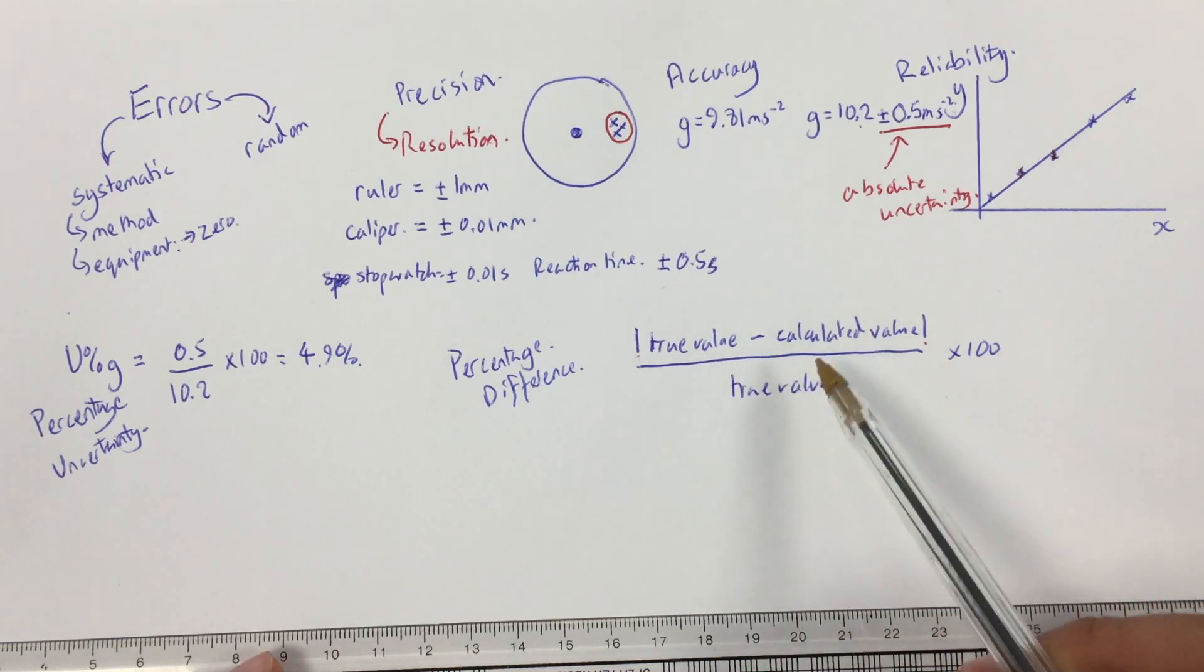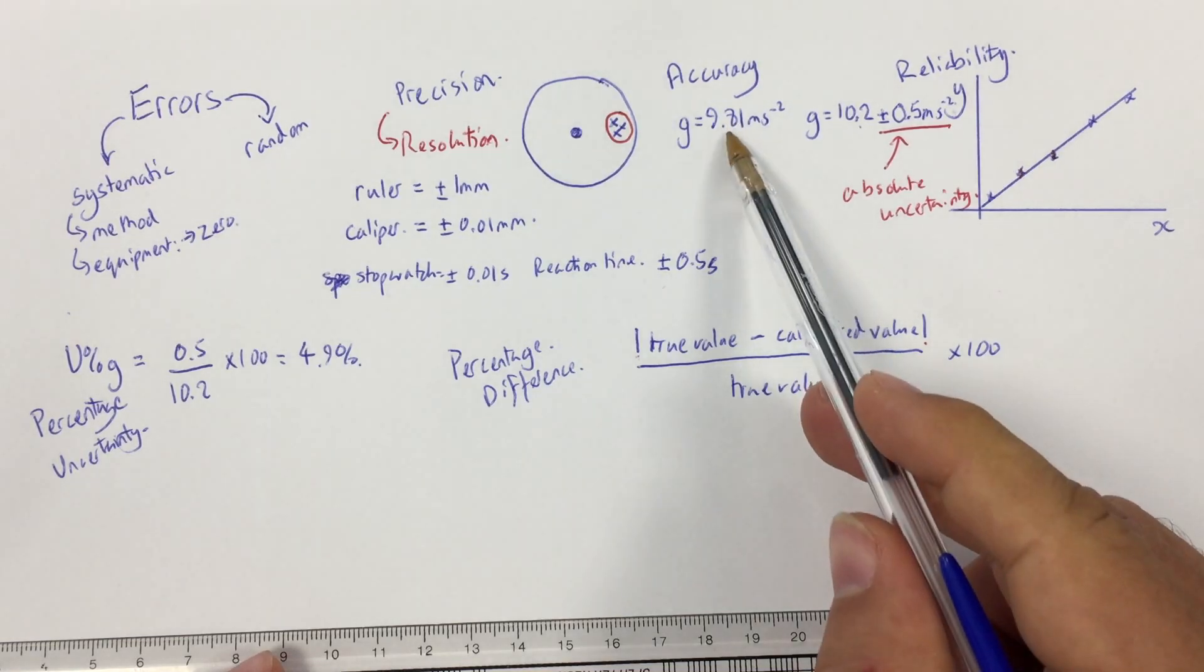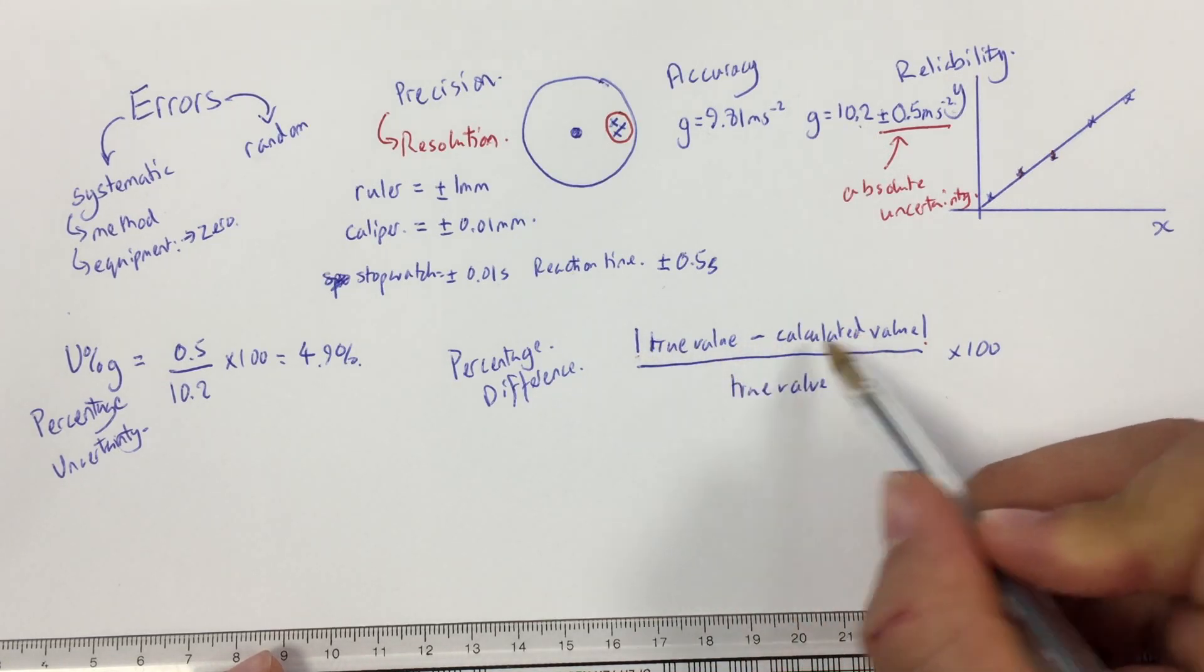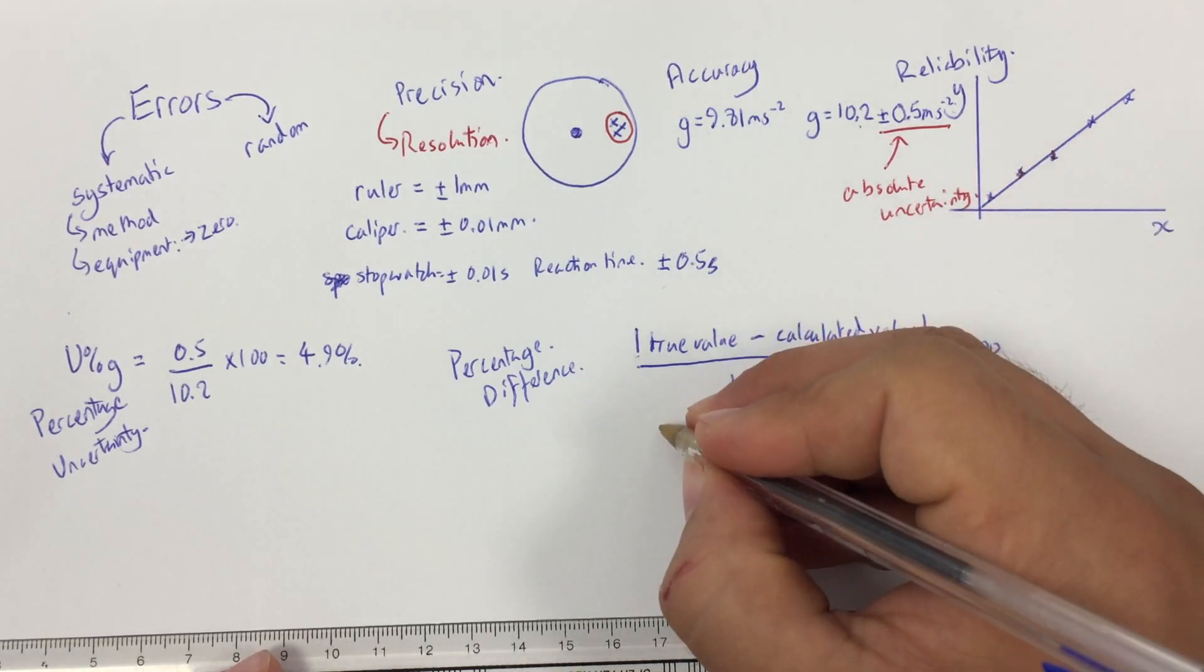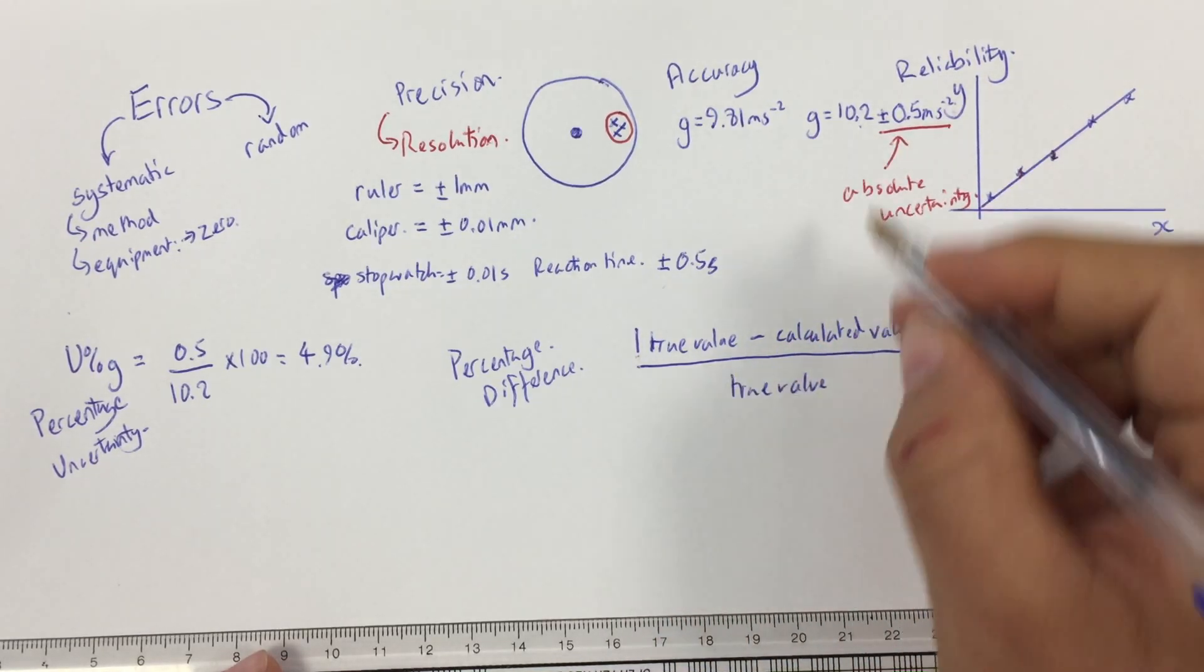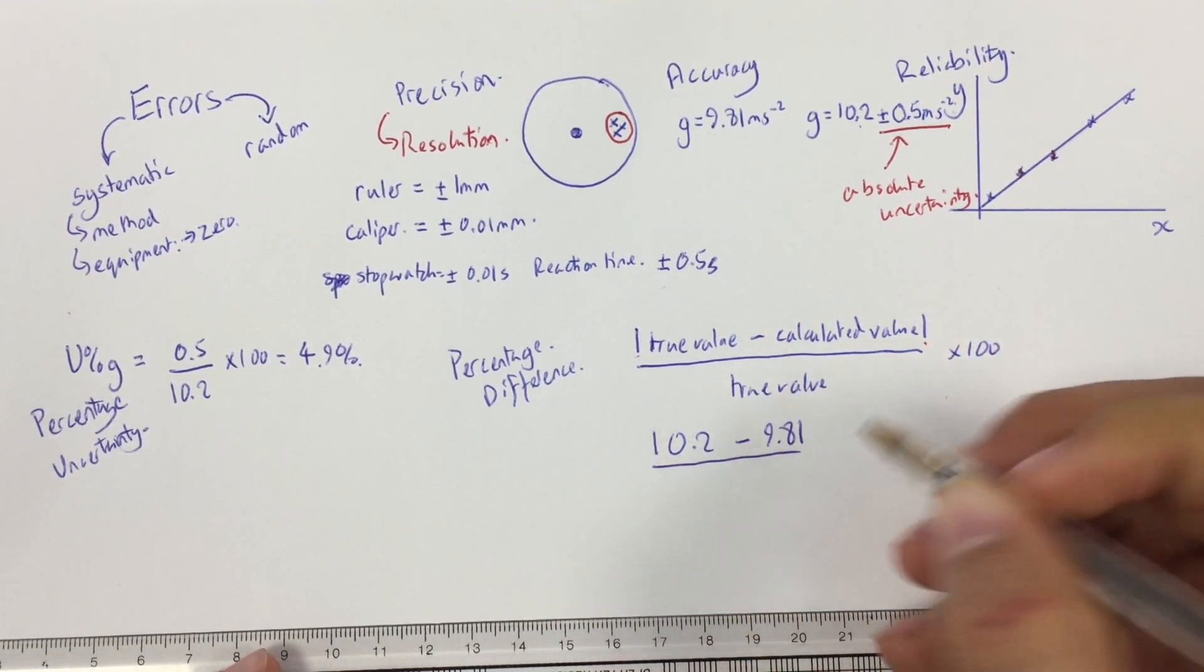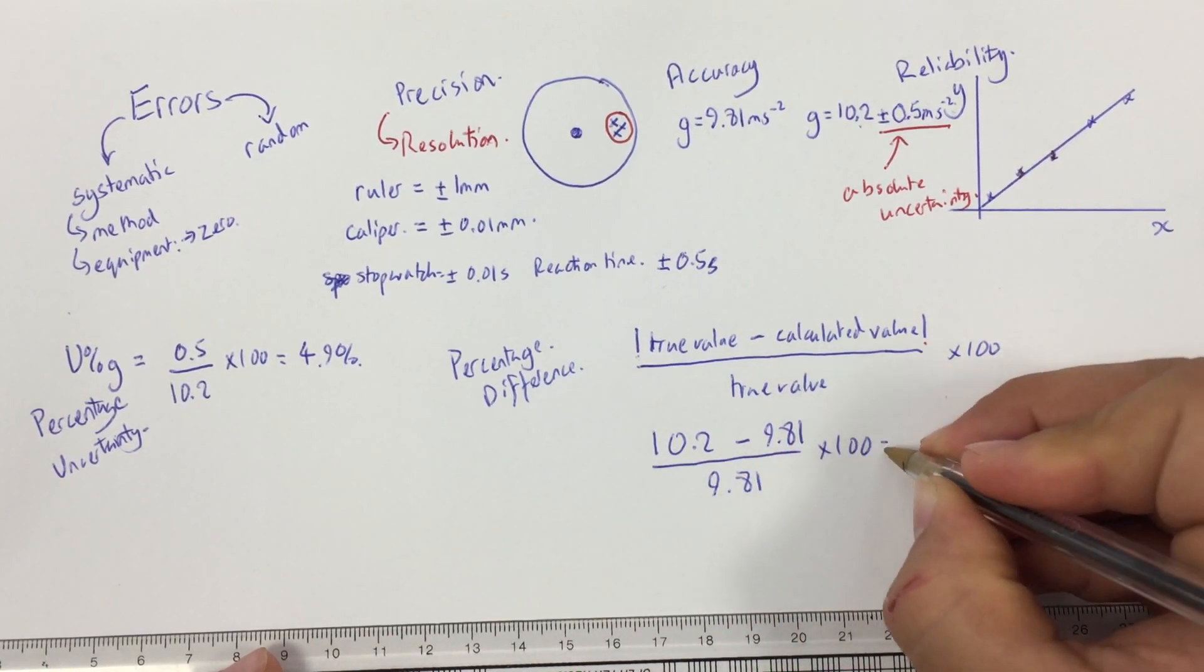In other words, the modulus just means that this number at the top can never be a negative. It's always going to be a positive. So, true value minus calculated value. If the calculated value was larger, like it is in this case, I can't get a minus answer. So, effectively, a modulus just means the answer to this is always the difference between them, and it's always a positive number. So, as an example, I'm just going to make the maths nice and easy. I'm going to do this the other way around, just so that it comes out. So, 10.2 minus 9.81 divided by 9.81 times 100. So, that's the calculation I'm going to do.